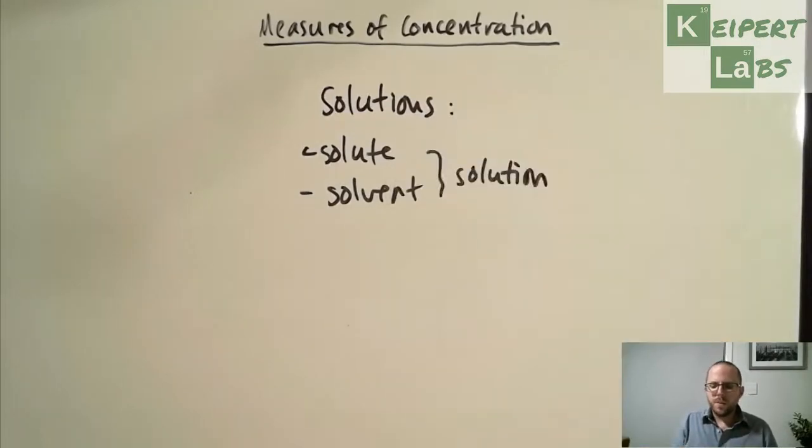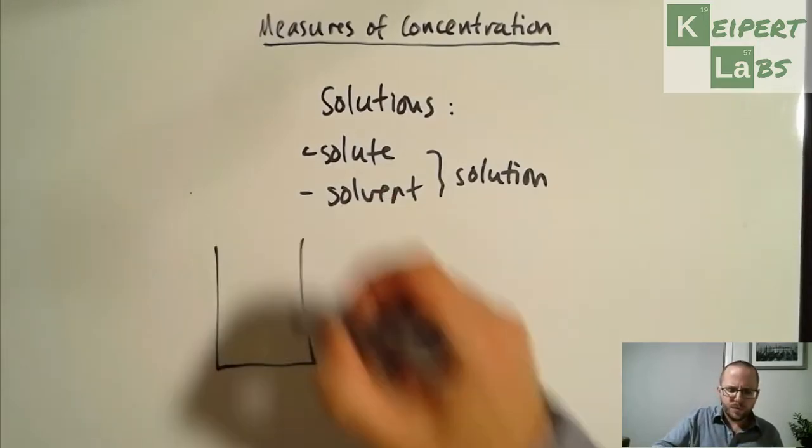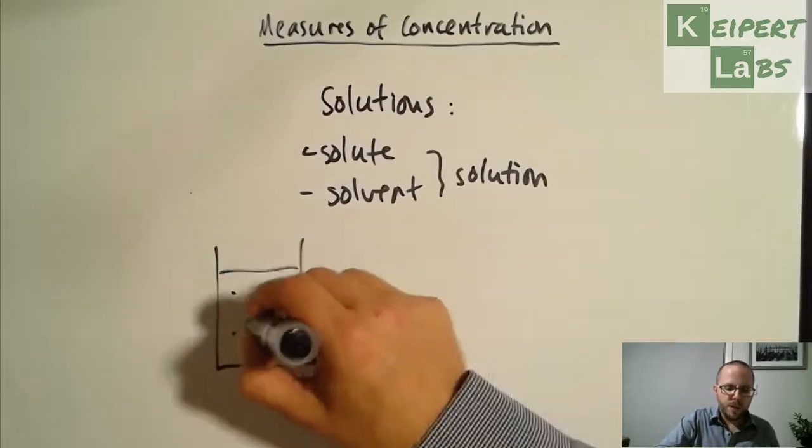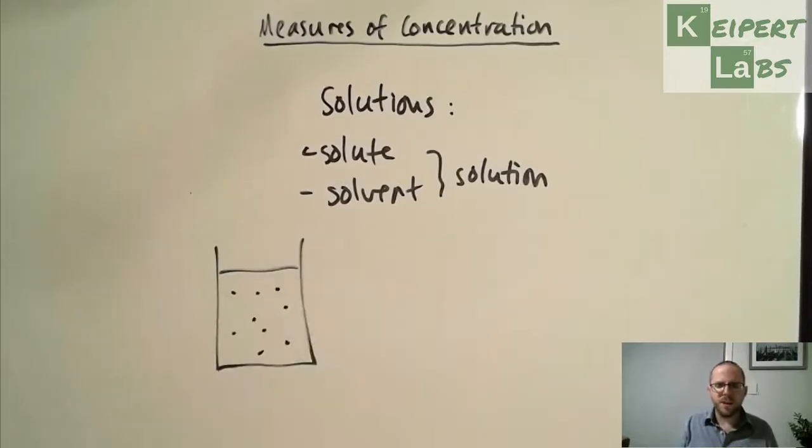We're thinking about a specific type of mixture. The idea that we're looking at with this solution is saying, if we have a certain amount of solvent, say for example water, one of our most common, and we have a certain amount of solute dissolved in it...